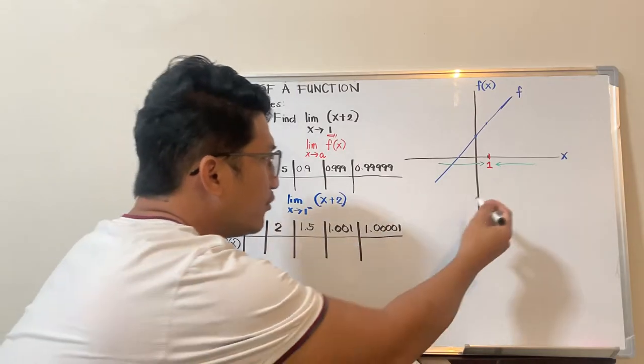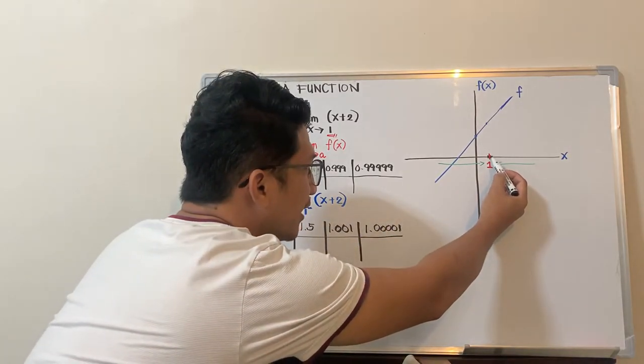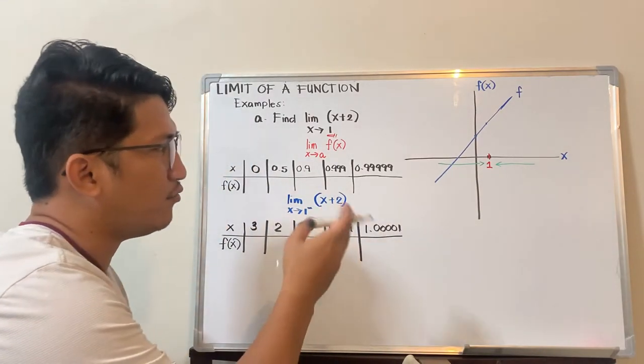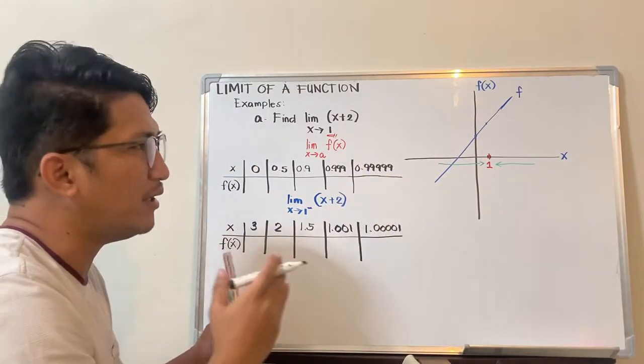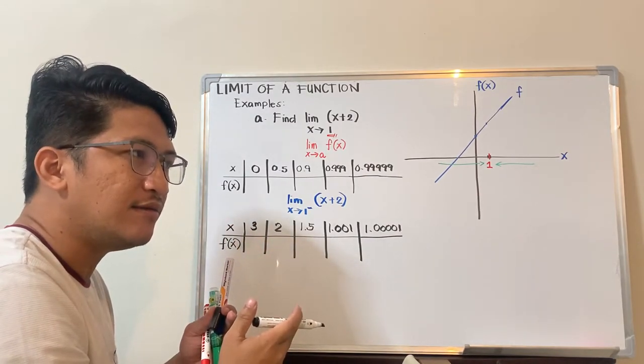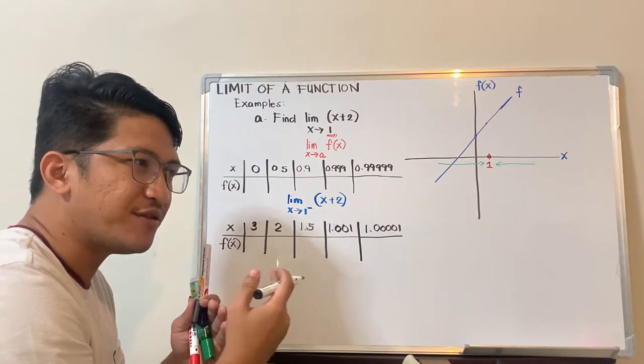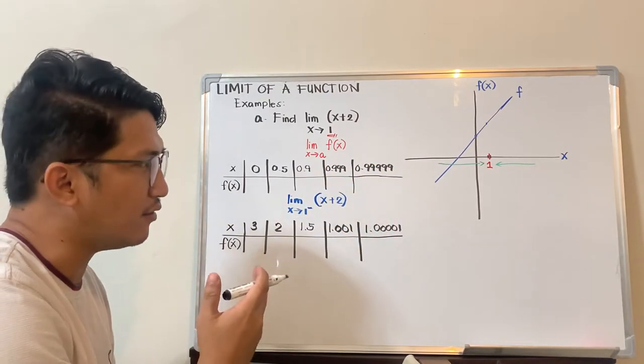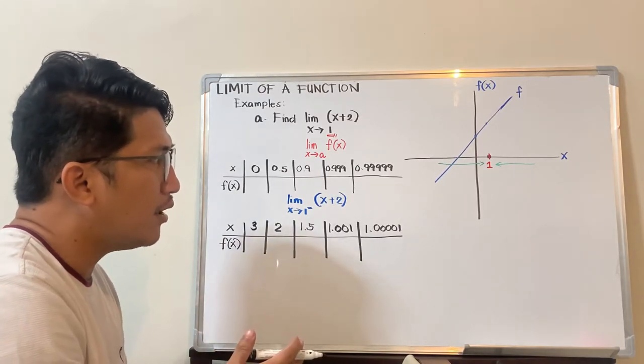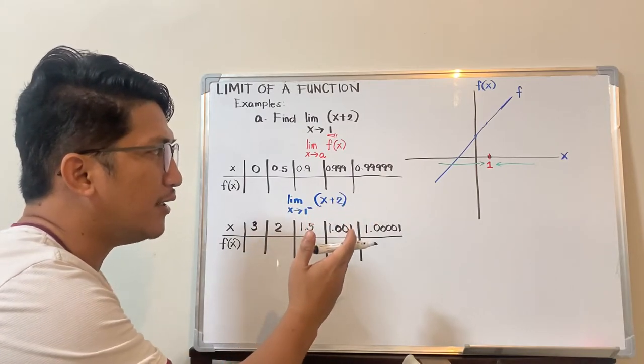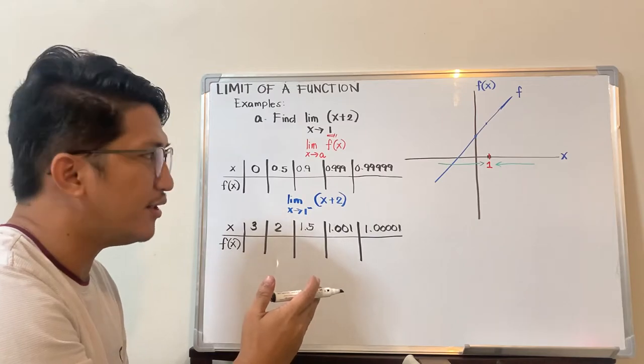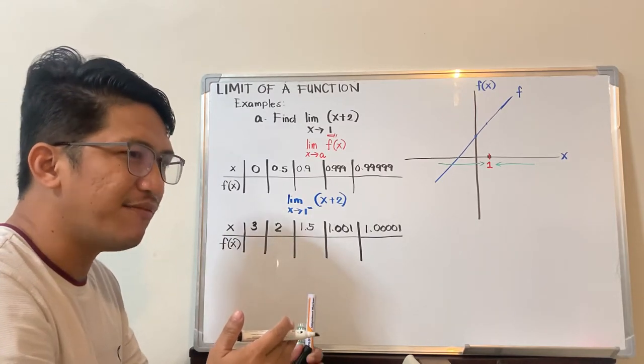If you have a very close number to 1 on the right side, like 1.0001 or 1.0000001—the more zeros you add, the closer you get to 1.